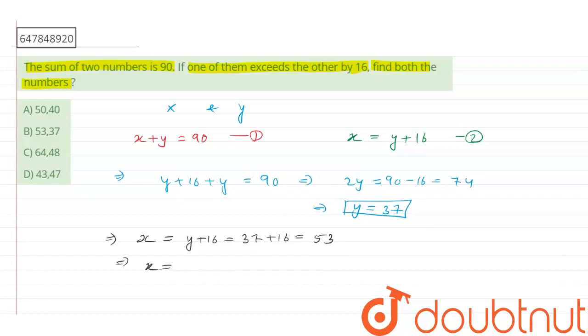It means we got the value of x as 53 and y as 37. So these are both values. x equals 53 is the first number, and the second number is y equals 37. So if we look at the given options, then option B is the correct option. Thank you.